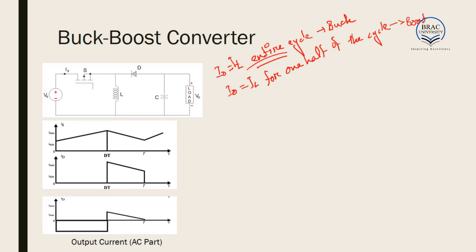For the buck-boost converter, I_L equals I_input when the switch is on and I_L equals I_output when the switch is off. So the output current equals the inductor current only in the half cycle when the switch is off. Therefore, we follow the procedure similar to the boost converter.